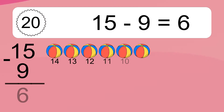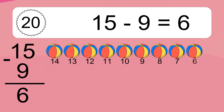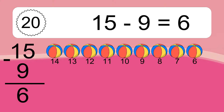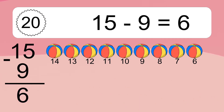15 minus 9 equals what? 15 minus 9 equals 6. Let's count it: 14, 13, 12, 11, 10, 9, 8, 6.